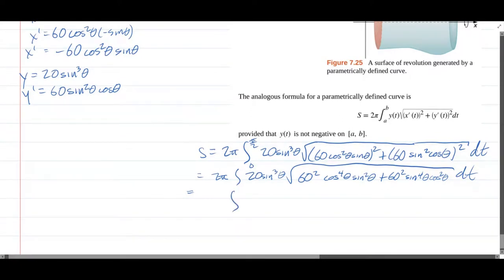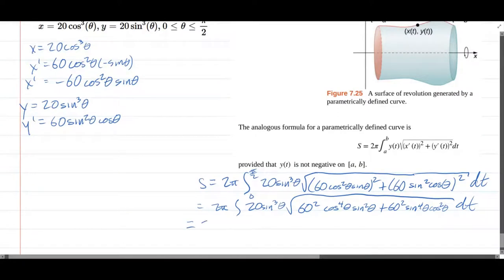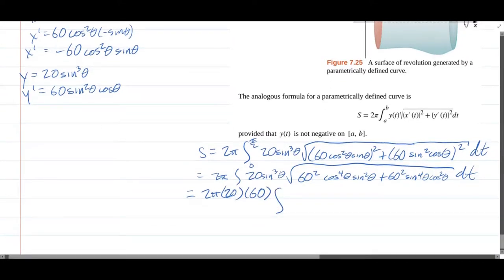So we have 60² we can factor out. When it comes out of the square root, it's 60. So we have 2π. The 20 is coming outside. The 60 is going to be factored out and brought outside. So we have integral sin³θ times the square root.